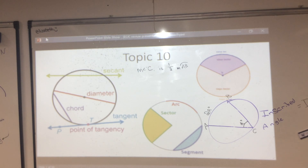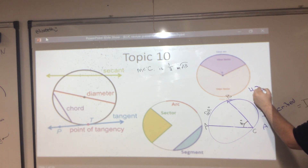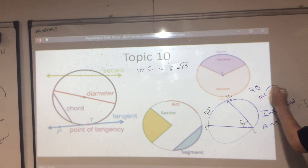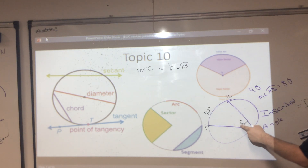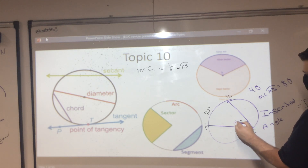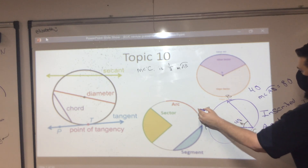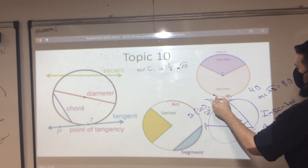Abby, if the measure of angle A is 40, what is the measure of arc AB? 80 — perfect. Because A is 40, and 40 times 2 is 80.